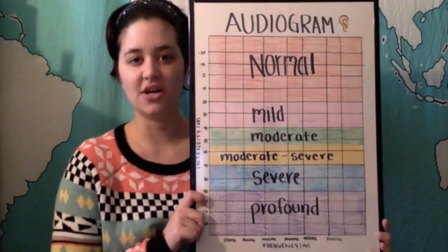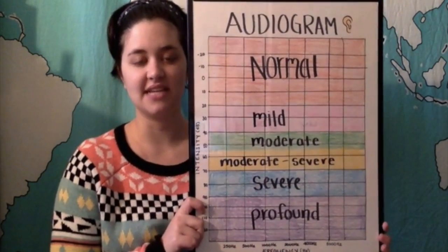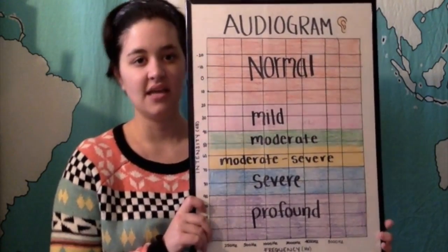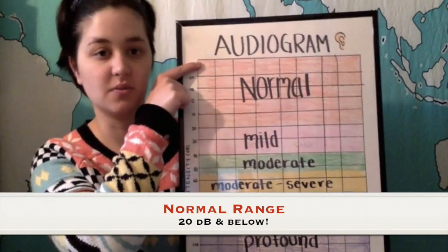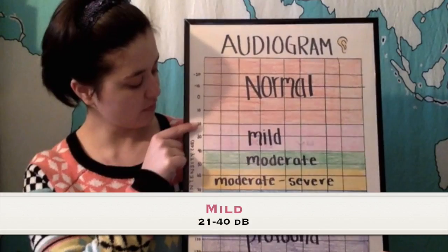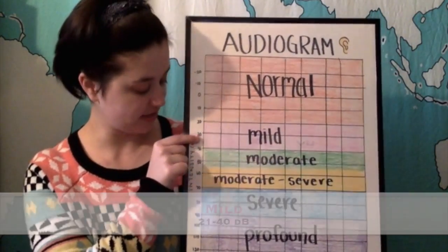The colors on this audiogram represent different levels of intensity that correspond to different types of hearing loss. Hearing thresholds below 20 decibels are in the normal hearing range. From 20 to 40 decibels, they're in the mild range.